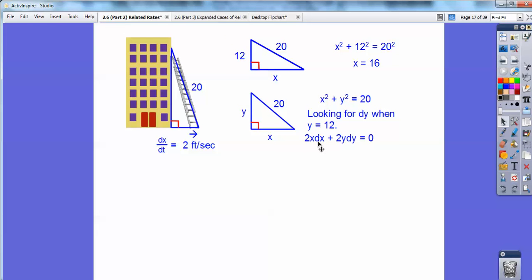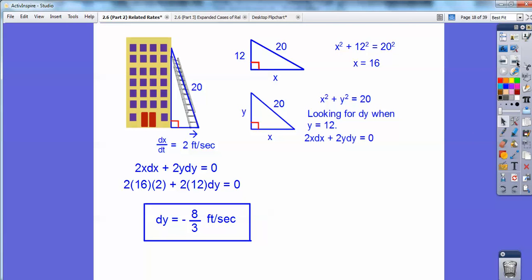So now I think I know everything. I know 2. I know x. I know dx is that 2. And then I know y is 12. And dy, that's what we're looking for. So we're going to go ahead and we get dy to be a negative 8 thirds feet per second. So it's coming down the wall. It's negative because it's coming down.